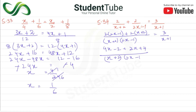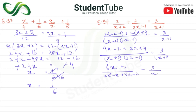So the numerator becomes 4x−2 + 2x+2 = 6x+4 over (x+2)(2x−1), equal to 3/(x+1). Now we expand the denominator: (x+2)(2x−1) = 2x² − x + 4x − 2.